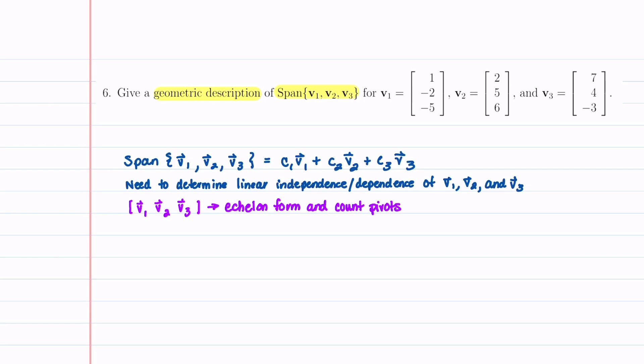What you need to know to solve this problem is that the span of V1, V2, and V3 is just a linear combination of those three vectors, and we can write that as C1·V1 + C2·V2 + C3·V3. In order to find the geometric description of our span, we need to determine the linear independence or dependence of our V vectors.